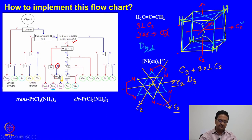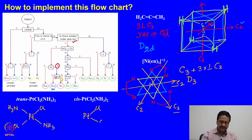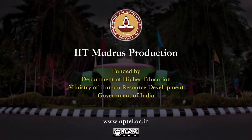I have written two molecules for which I would like you to find out the point groups yourself. We have trans-platinum with 2 chlorines in trans position and 2 ammonia in trans position; and the cis compound with 2 chlorines on one side. We already discussed the symmetry elements present in these 2 molecules in the previous class, so you try to find out the point groups. We will start the next lecture from here. Thank you.